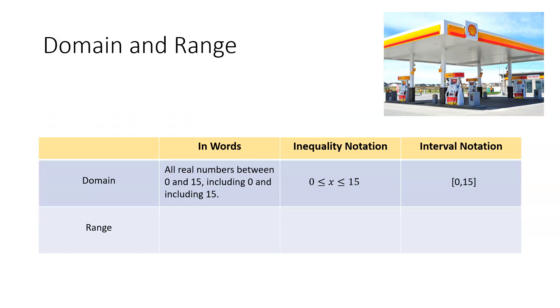So going back to our range, again our range represents all the values that can be taken on by how much we're going to be paying in our total cost. And so our range in words is all real numbers between 7 and 41.35, including 7 and including 41.35.